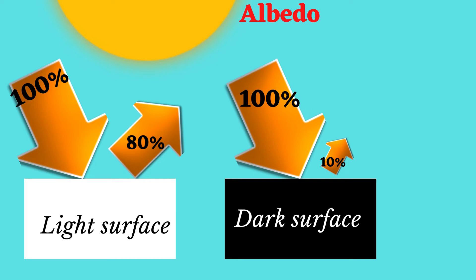The ratio between the incoming solar radiation which is absorbed and the amount reflected is expressed as a percentage and is known as albedo. In other words, albedo is the degree of reflectivity.